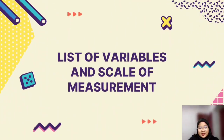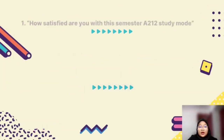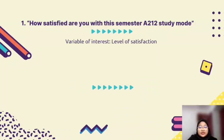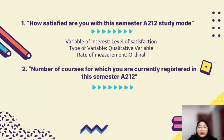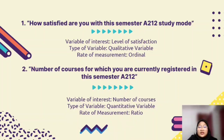I will continue with the list of variables and scale of measurement. Our first variable is how satisfied students are with the Semester A212 study mode — a level of satisfaction. The type of variable is qualitative and the scale of measurement is ordinal. For variable 2, the number of courses students are currently registered for in Semester A212 is collected using a ratio scale, which is a quantitative variable.